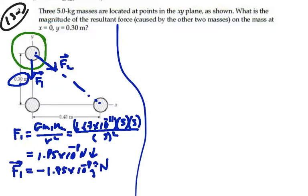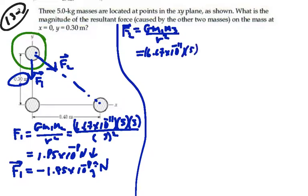Now let's get the magnitude of F2. That is G mass 1 mass 3 over the distance between them squared. 6.67 times 10 to the minus 11 times 5 kilograms times 5 kilograms over... What's the distance?